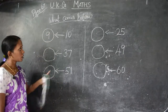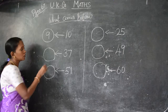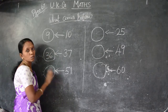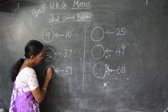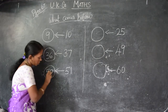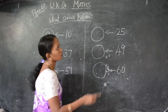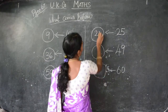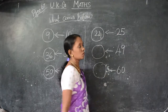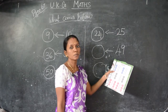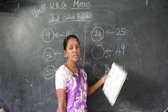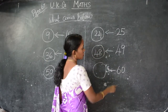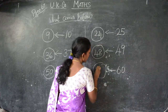For 37, what is the before number? 36. For 51, before number is 50. Next, 25, before number is 24. For 49, before number is 48. For 60, before number is 59. Like that you have to find out and write children.